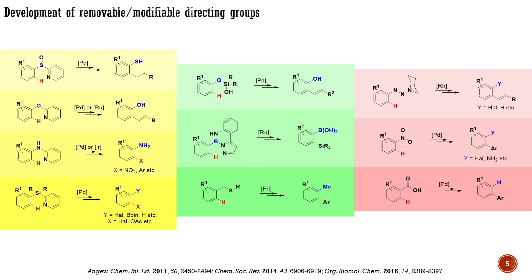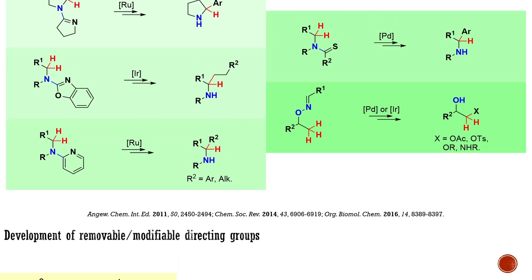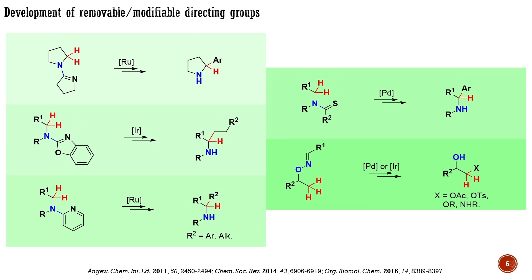The only removable directing group based on a carbon-carbon bond is the carboxyl group. However, this strategy has limited scope because decarboxylation requires harsh conditions. For obvious reasons, there is not a single removable or modifiable directing group suitable for CH activation of unfunctionalized aliphatic compounds. However, for functionalized aliphatic compounds, such as aliphatic amines or alcohols, there are some removable directing groups that are typically attached to the functional group within the molecule.